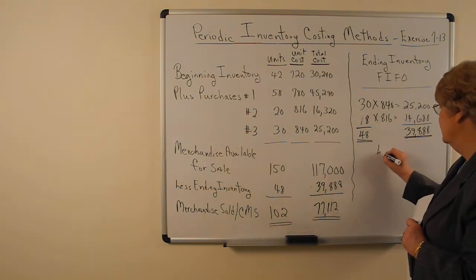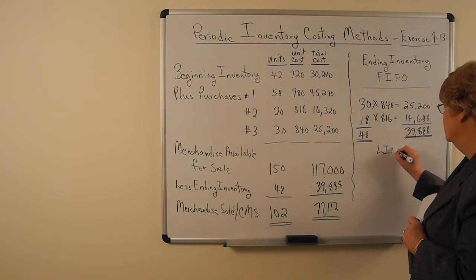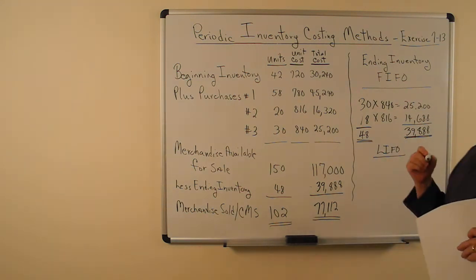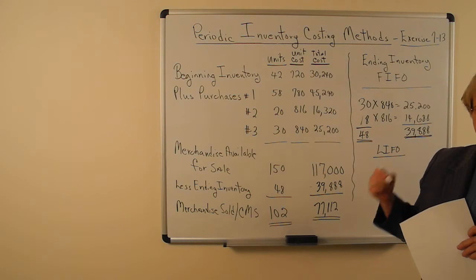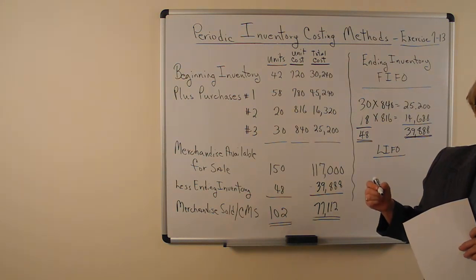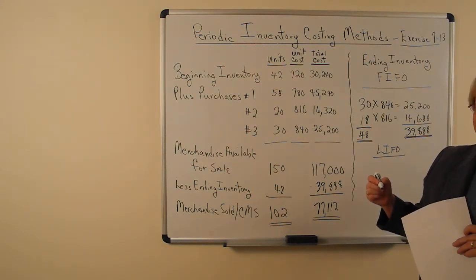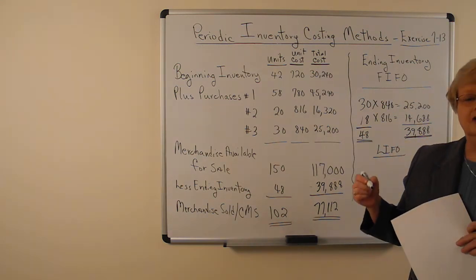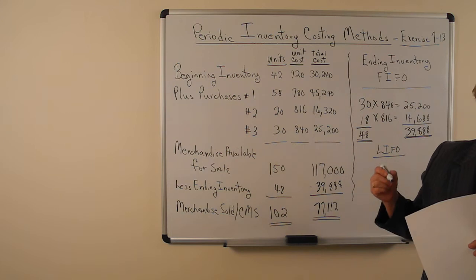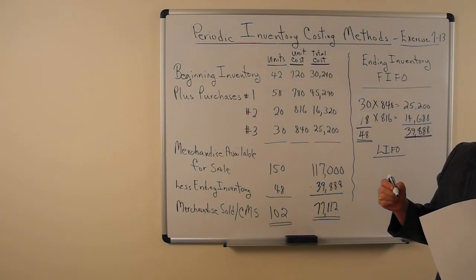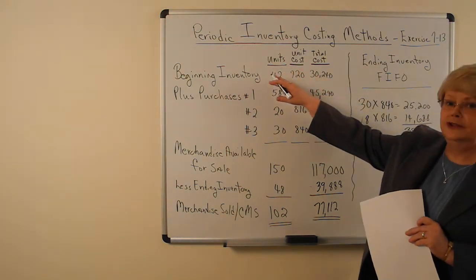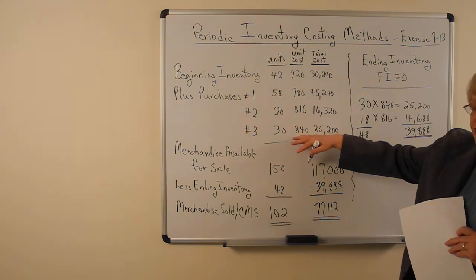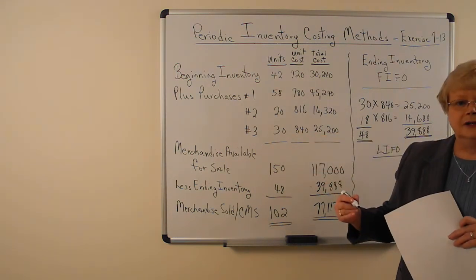Now let's look at LIFO. LIFO assumes that the last items that come in are the first items that you sell. So what you have left in inventory are the first units. LIFO assumes the last items in are the first items sold.